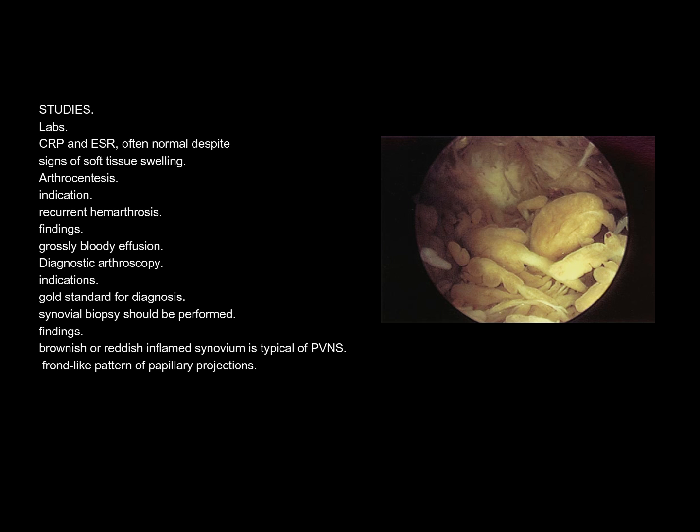Studies and Labs: CRP and ESR are often normal despite signs of soft tissue swelling. Arthrocentesis indication is recurrent hemarthrosis; findings show a grossly bloody effusion. Diagnostic arthroscopy is the gold standard for diagnosis; synovial biopsy should be performed. Findings show a brownish or reddish inflamed synovium typical of PVNS, with a frond-like pattern of papillary projections.